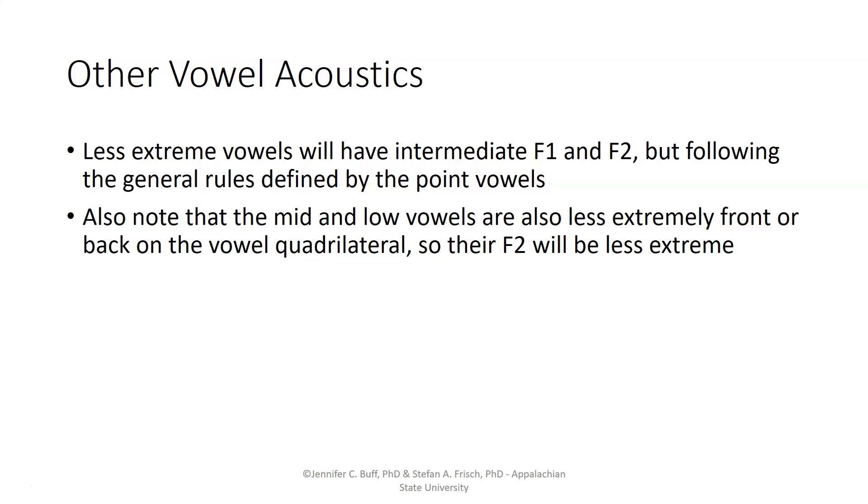In addition, our mid and low vowels vary less from front to back. That vowel quadrilateral isn't a square. It's wider at the top than it is at the bottom. So variation in F2 as we move down toward low vowels becomes less extreme.